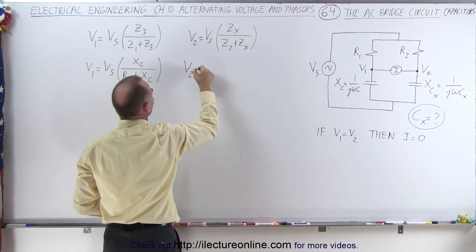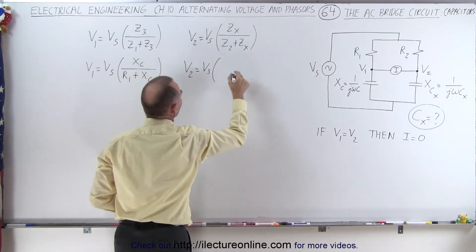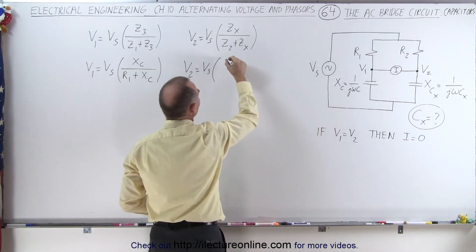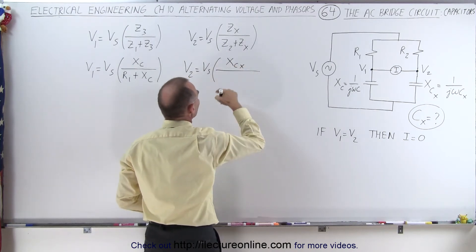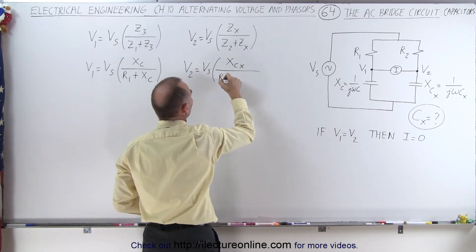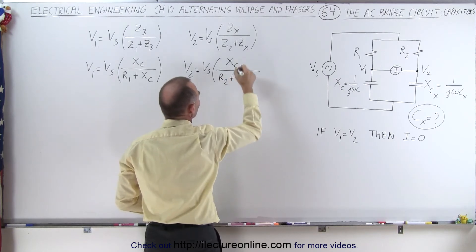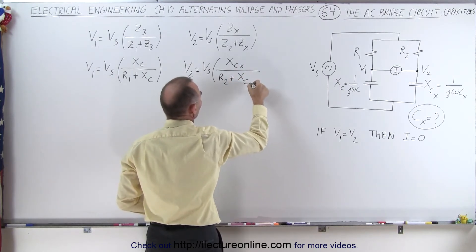On the right side, we have V2 is equal to the source voltage times Z sub x, which is now going to be X sub c sub x, the unknown capacitor reactance. Z sub 2 is now R sub 2, and plus Z sub x is X sub c sub x.